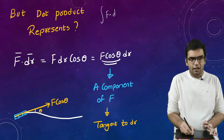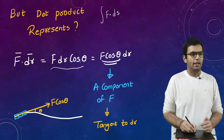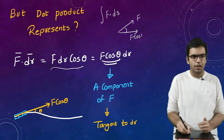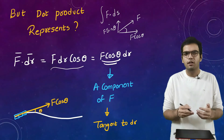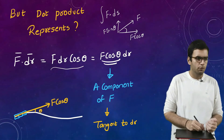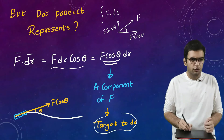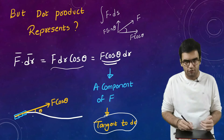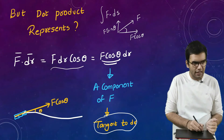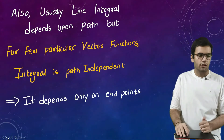The dot product F·dr always deals with cos θ. A vector F can have two components: F cos θ parallel to the path and F sin θ perpendicular to the path. Considering a small element dl, F cos θ is the component tangential to that dl element — it passes directly through the element along the curve.